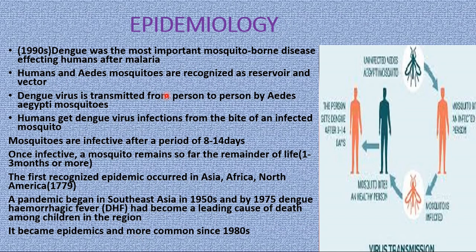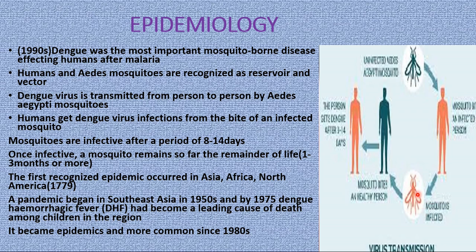Moving to epidemiology — dengue fever is considered the most important mosquito-borne disease affecting humans, next to malaria. Humans and Aedes mosquitoes are recognized as reservoirs and vectors respectively, and the dengue virus is transmitted from one person to another by the mosquito Aedes aegypti. Another species, Aedes albopictus — a mosquito of Asian origin — is also believed to spread dengue fever. Humans get dengue virus infection from the bite of an infected mosquito.